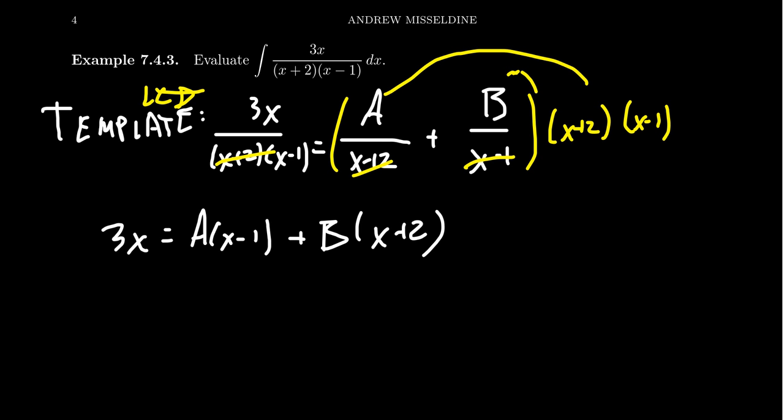Same thing with the B. The factor that was below it, which is x-1, gets canceled out and it'll be partnered with the factor it was missing, the x+2.